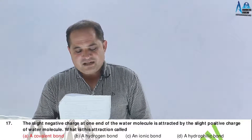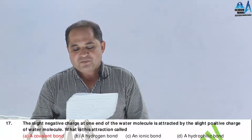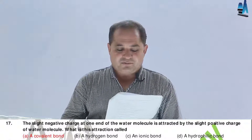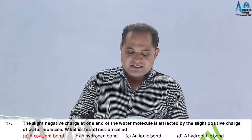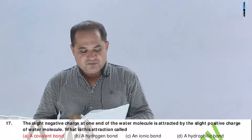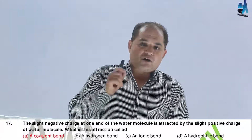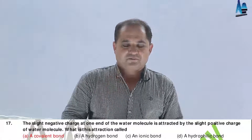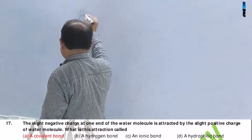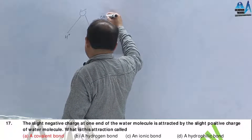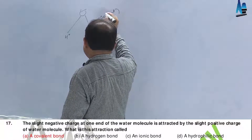Question number 17. A slightly negative charge at one end of a molecule is attracted by the slightly positive charge of a water molecule. What is this attraction called? A, covalent bond; B, hydrogen bond; C, ionic bond; D, hydrophilic bond. When hydrogen and oxygen are attracted by positive and negative charges in water with sharing of electrons, the bond is covalent. Answer should be A — covalent bond.